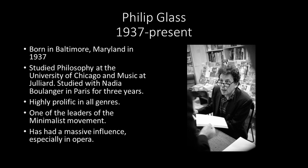With his operatic trilogy — Einstein on the Beach, Akhenaten, and Satyagraha — composed from the mid-1970s into the early 1980s, Glass almost single-handedly brought back opera as a major musical genre. His output is huge, with numerous operas, symphonies, concerti, and string quartets to his credit. In recent years, he has worked mostly within the more traditional concert music repertory, with over ten symphonies to his credit, while retaining, refining, and expanding much of his earlier musical language.